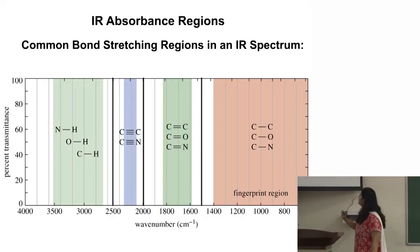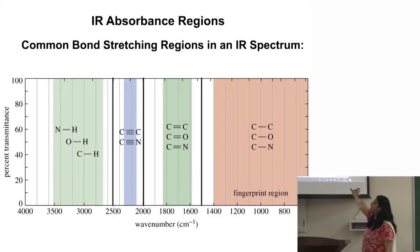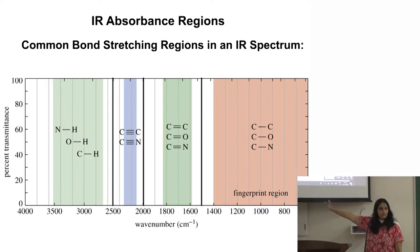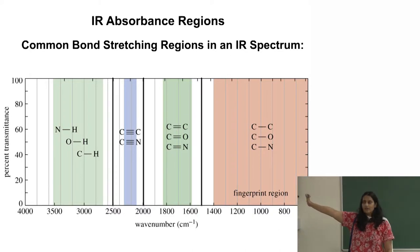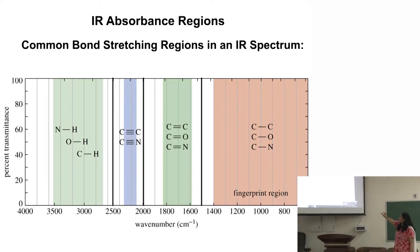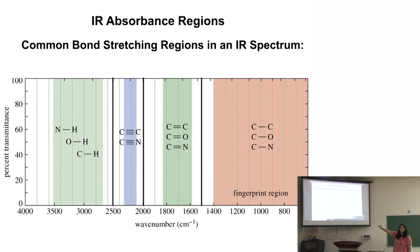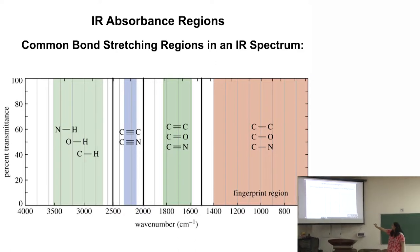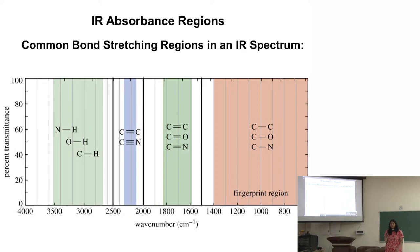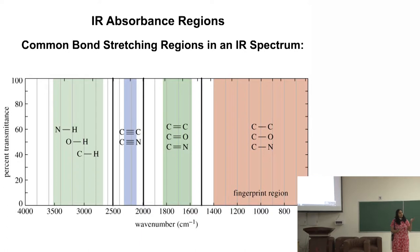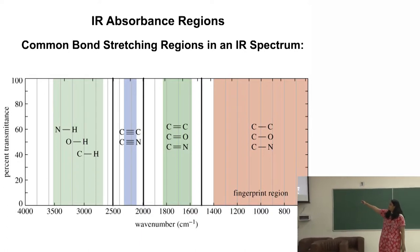Let us verify our predictions. Carbon-carbon single bond vibrates between 0 to 1500 cm⁻¹ in wavenumber. Carbon-carbon double bond is between about 1500 to 2000 cm⁻¹. Triple bond is between 2000 to 2500 cm⁻¹. That prediction was right. The same trend holds for carbon-nitrogen double bonds and carbon-nitrogen triple bonds.